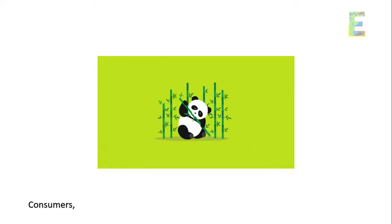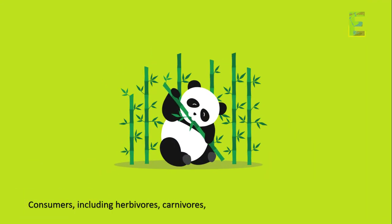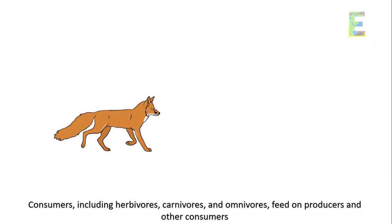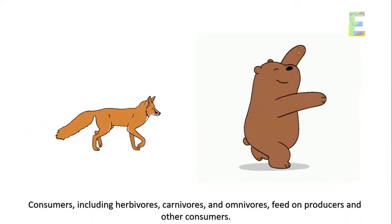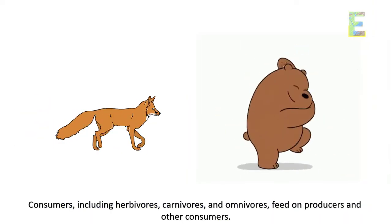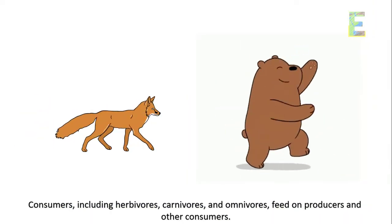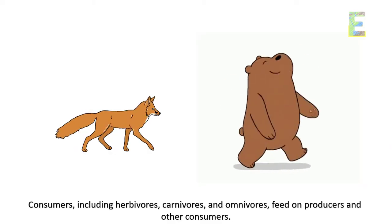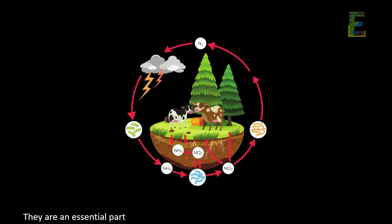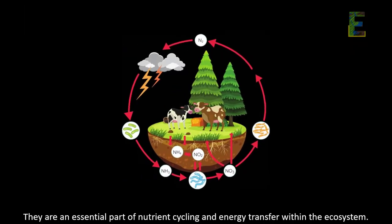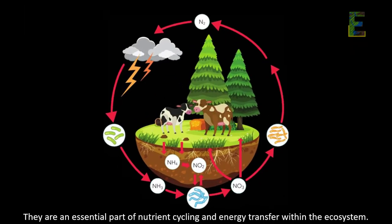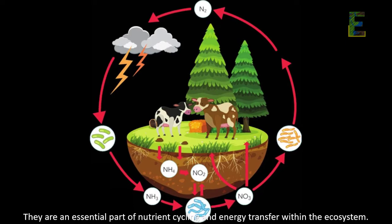Consumers, including herbivores, carnivores, and omnivores, feed on producers and other consumers. They are an essential part of nutrient cycling and energy transfer within the ecosystem.